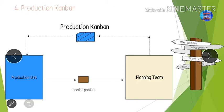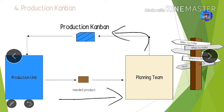For production Kanban: when the planning team requires parts, they pull the production unit through the Kanban, and the production unit produces the parts and delivers them to the planning team. The production Kanban tells us what to make, where to make it, how much quantity we need to make, and when we need to make the parts.